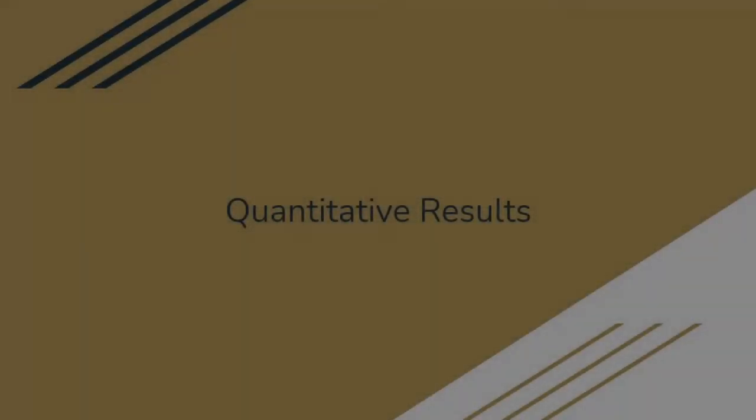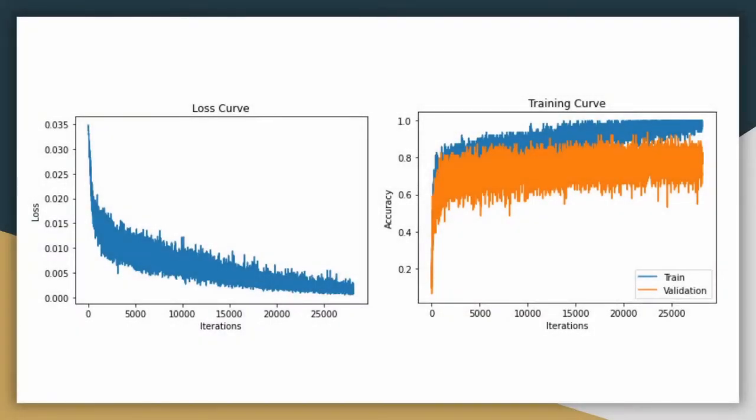Now we are moving on to the quantitative results. These are the loss and training curves for our best model. If we compare the training and validation curve, we see that our model is not overfitting. The final test accuracy was 80.12%. This is a good result, but we needed other metrics to make sure of that. Compared to the baseline that had a 32% test accuracy, it is performing well.